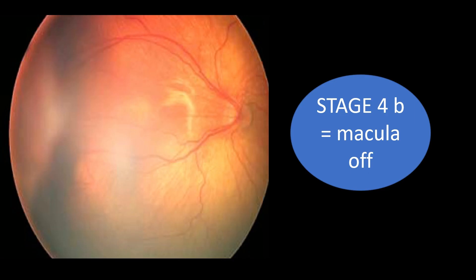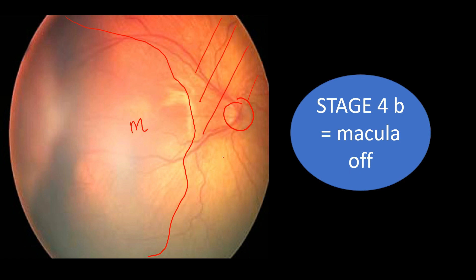In another picture, the disc is visible and there is a color change showing partial detachment. The macula is somewhere in the involved region, so the detachment is incomplete but the macula is involved — therefore this is stage four B macular ROP.